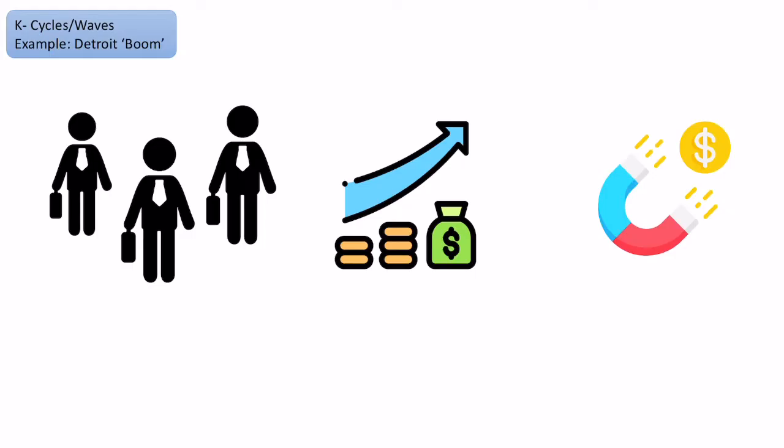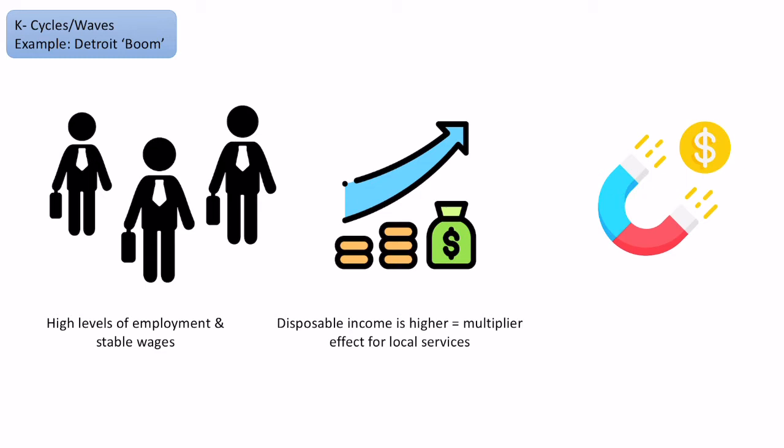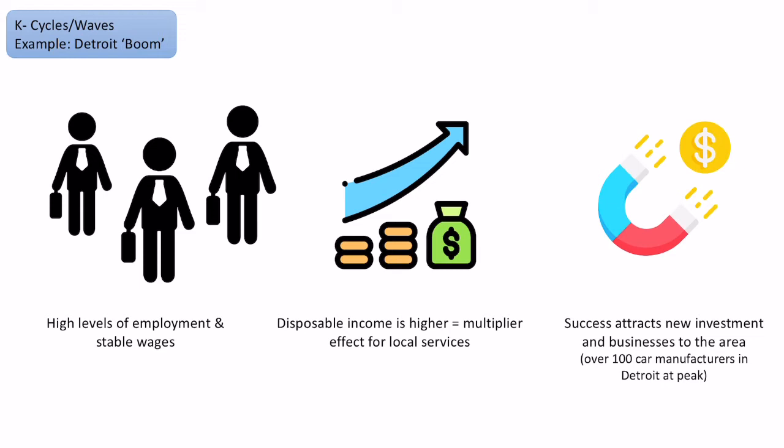In terms of how it affected people living there: employment would have been very high, with very stable wages and lots of disposable income. This would have had a knock-on multiplier effect, allowing local services to grow. Because Detroit became a hub of innovation where the best cars in the world were being made, it attracted investment, businesses, and skilled people to the area. For example, because Ford had set up this incredible innovative manufacturing hub, about 100 other car manufacturers moved there — companies like Buick and Chrysler — because it was the centre of innovation at that time.